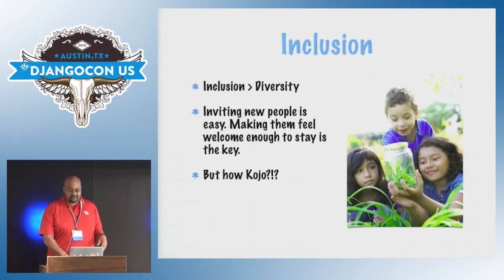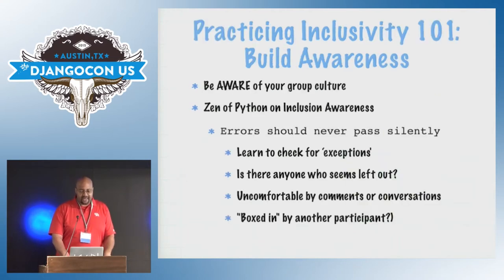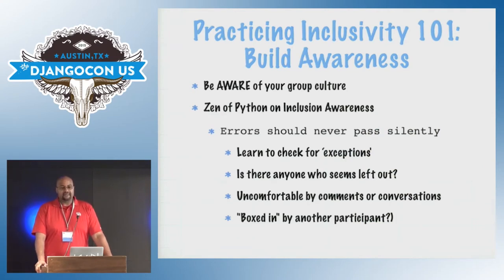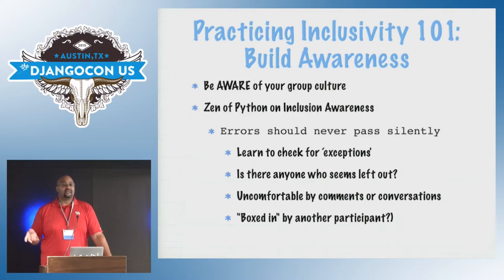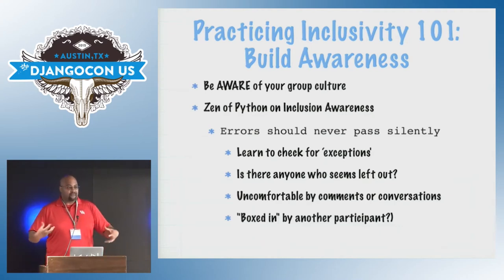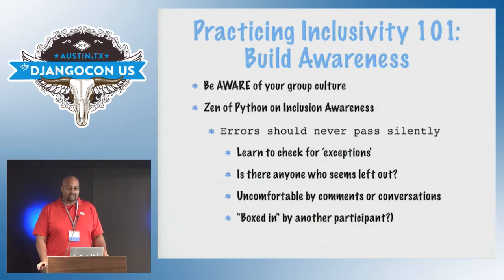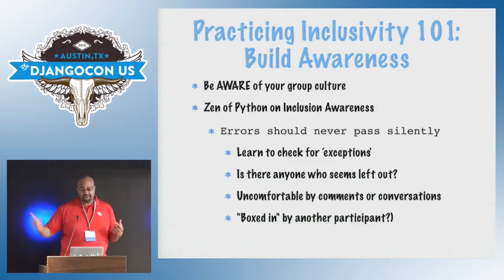Now that we've talked about what inclusion is, the focus of the talk is: how do you actually do this? I've got some steps here — by no means an exhaustive list, but some basic thoughts on how you can make your individual local community cultures a little more inclusive. While Django and Python are global projects, the community actually happens in your individual groups — your local meetups and user groups. Step one is to be aware of your group culture. Step one is building awareness.